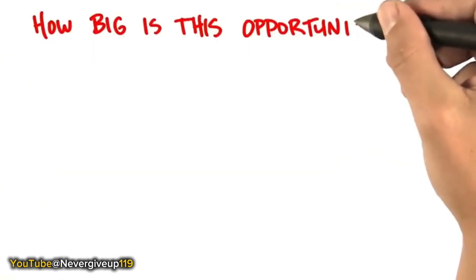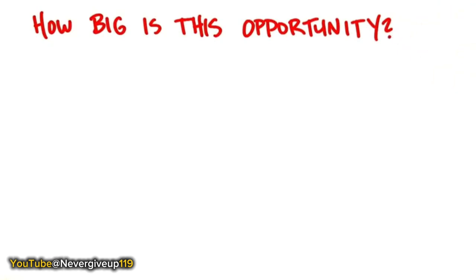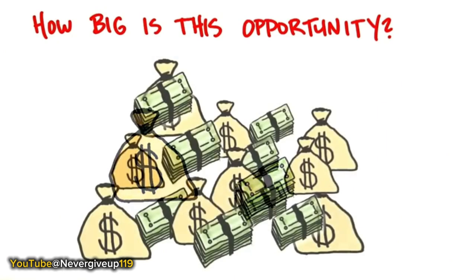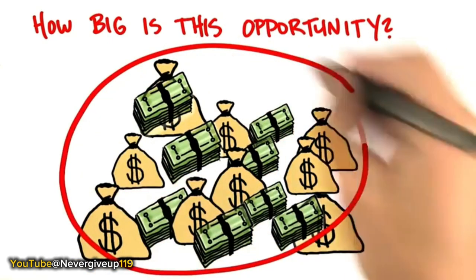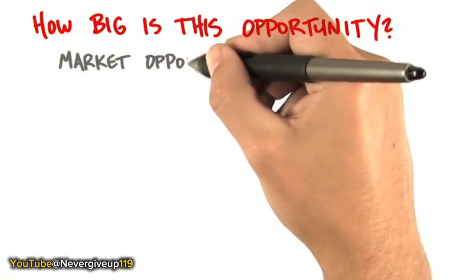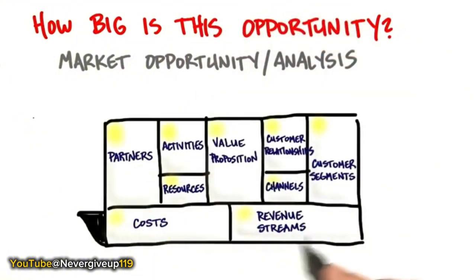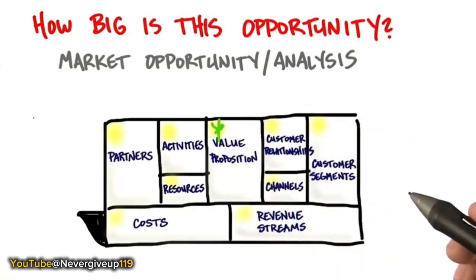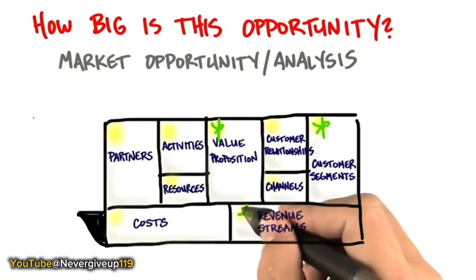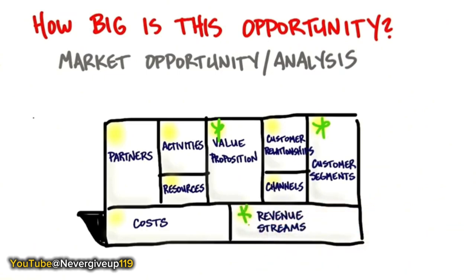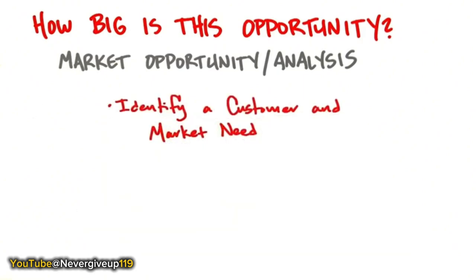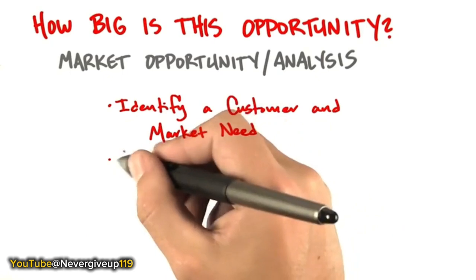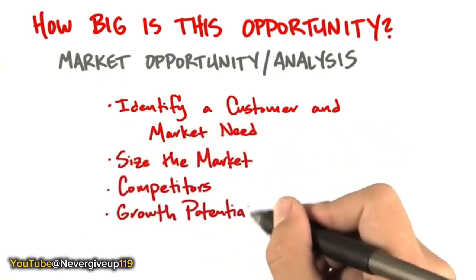One of the things we keep asking startups to think about is: how big is this opportunity? It's a fancy way of asking - when you're done spending the next couple of years on this startup, will you make a million or a billion? We want to do what we call a market and opportunity analysis. You've already put together a business model canvas with your hypothesis about customers and revenue, but now you want to size the market, look at competitors, and figure out whether this market could grow.